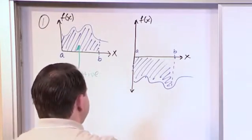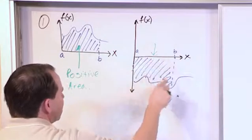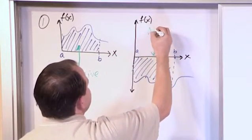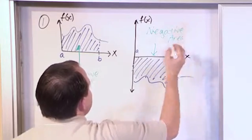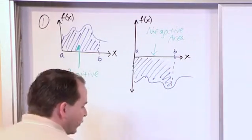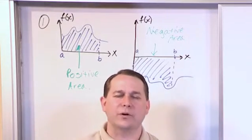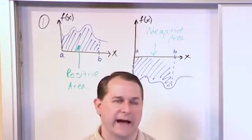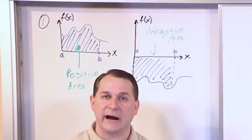You might be able to guess, since I'm going through the point of showing you this, that if the area lies below the x-axis, that's a negative area. Now this is nothing mystical to be concerned about. All it means is it's a definition thing. It's how we're calculating the area that causes this to happen.